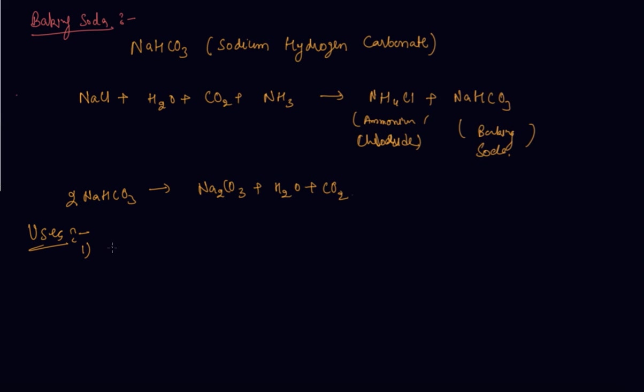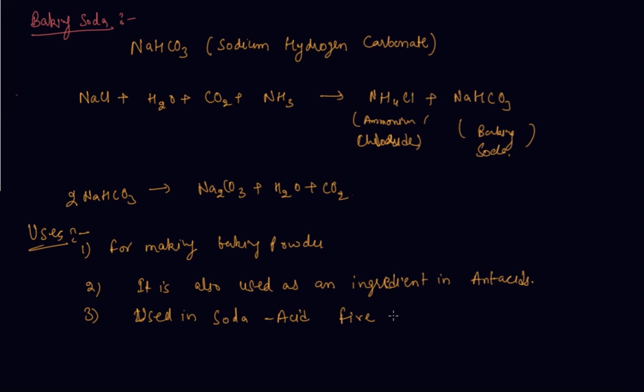What are the uses of baking soda. For making baking powder which is a mixture of baking soda and a mild edible acid such as tartaric acid. Second usage is it is also used as an ingredient in antacids. Third, used in soda acid fire extinguishers. So with this, baking soda is complete.